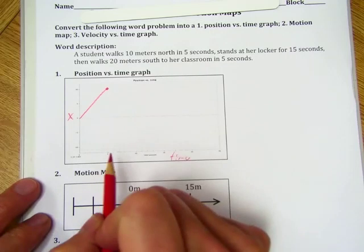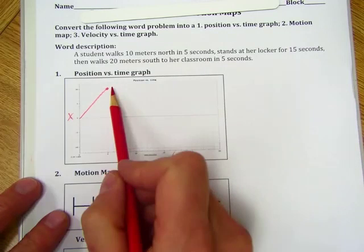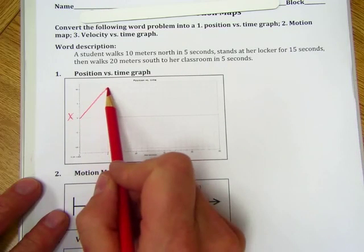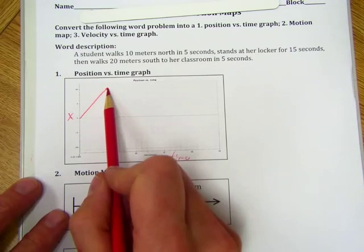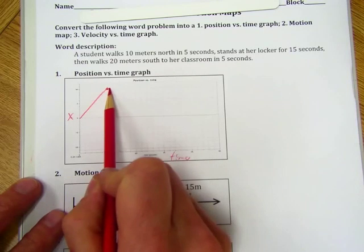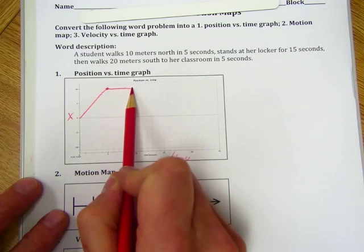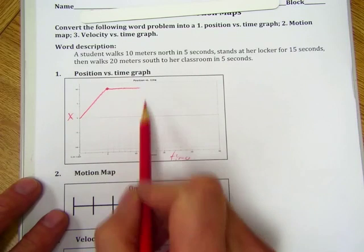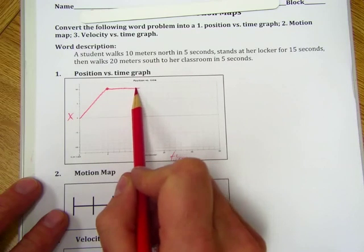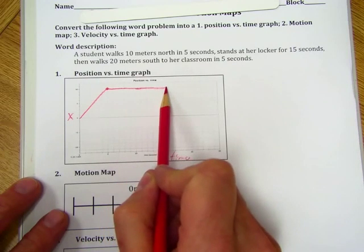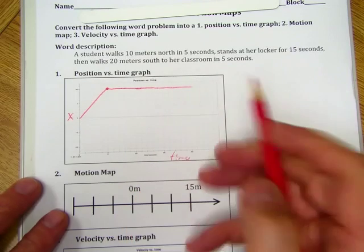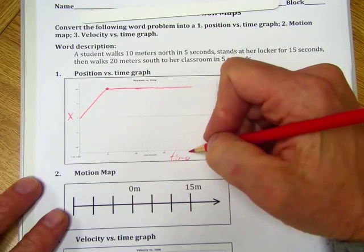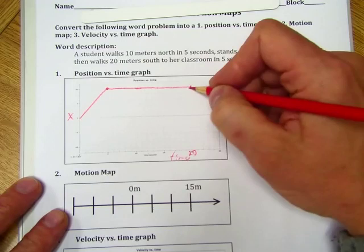Stands at her locker for 15 seconds. So her position at 10 meters here is going to stay for 15 seconds. So there's 5, so a total of 10 seconds, but 5 that she's been standing at the locker. 10, 15, so a total of 20 seconds.